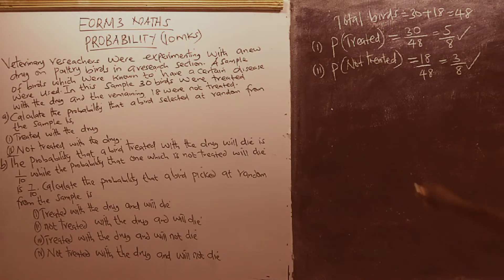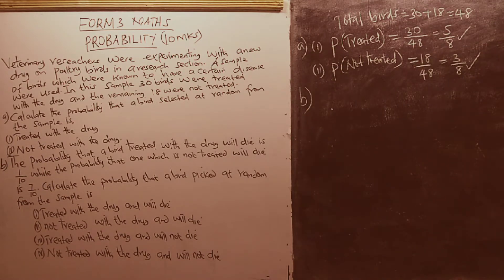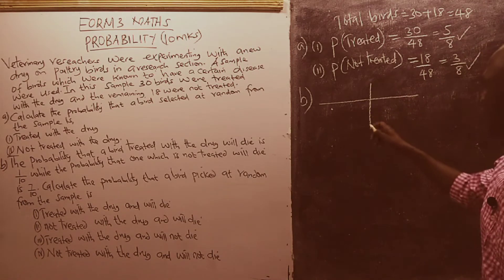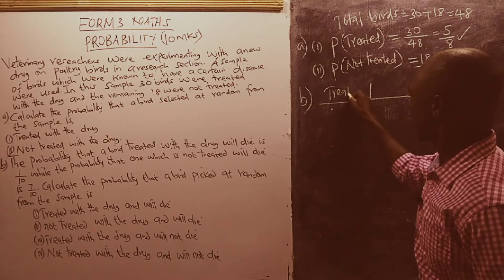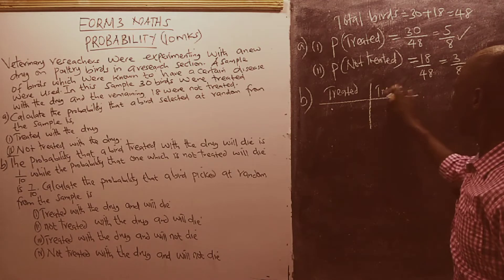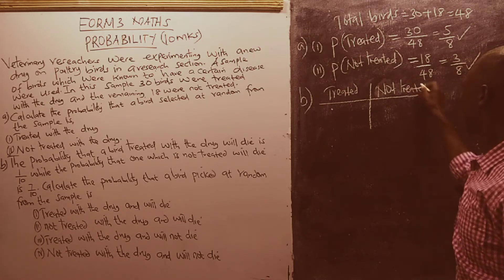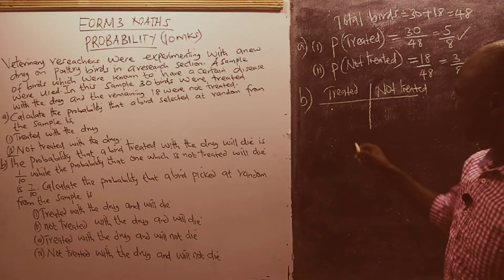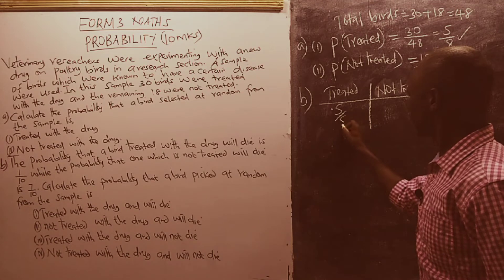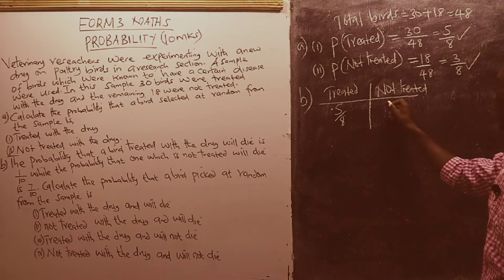To do Part B, we summarize the information in a tabular manner. We have the birds which are treated and those which are not treated. The probability that a bird is treated is 5 over 8, while the probability that a bird is not treated is 3 over 8.